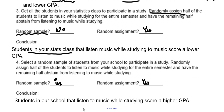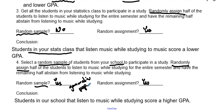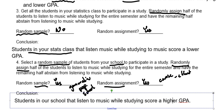Study 4: Select a random sample of students from your school and randomly assign half to listen to music while studying for a semester and the other half to not listen to music. There is a random sample, so we can generalize to the population — in this case, the school. And there is random assignment, so we can establish cause and effect. Students in the school who listen to music while studying score a lower GPA — there is a cause and effect between listening to music while studying and lower GPA.